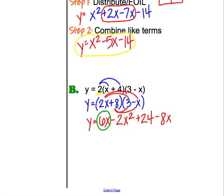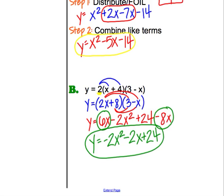So when we go to combine like terms, I see I've got a 6x and a minus 8x, which will give me, I'm going to first put my negative 2x squared down, because I need that highest x term first. 6x minus 8x is negative 2x plus 24. So this will be my standard form.